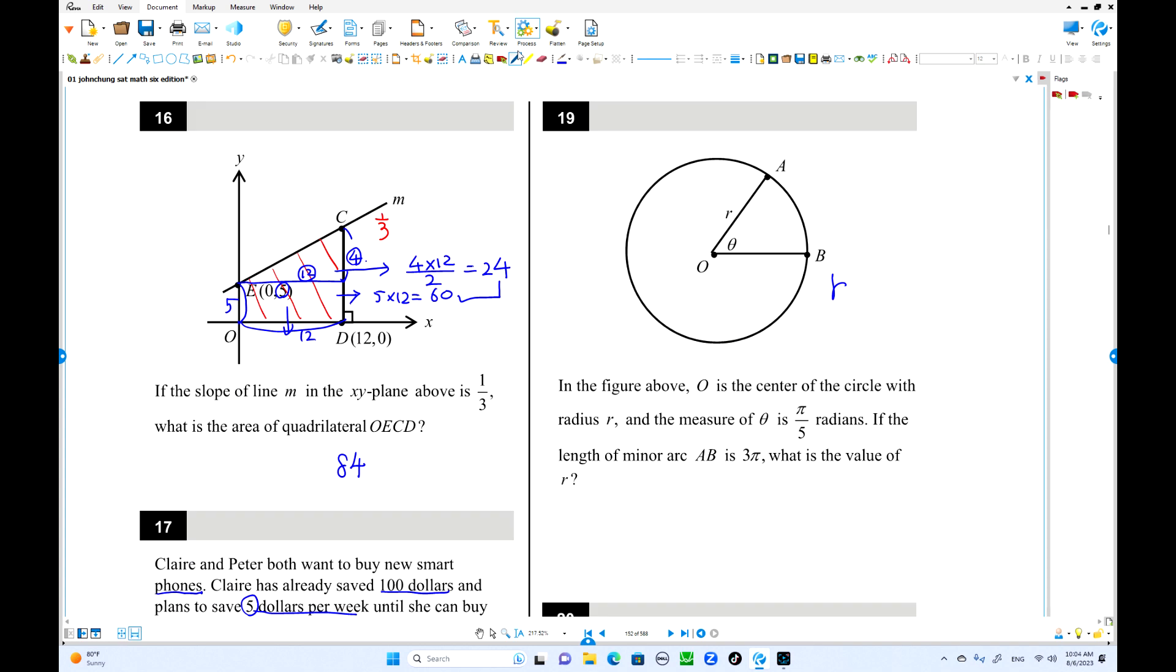Now circle with central angle pi over 5. This is in radians. In this radian, the arc length is given, that is 3 pi. That's the formula: R times the angle in radian equals the length of this arc length, S. You can use this formula. So R times pi over 5 equals 3 pi. Pi is out. Times 5 on both sides. So R equals 15.